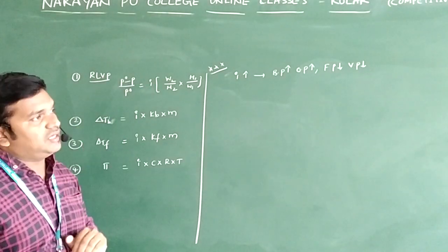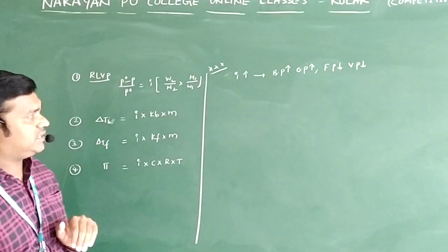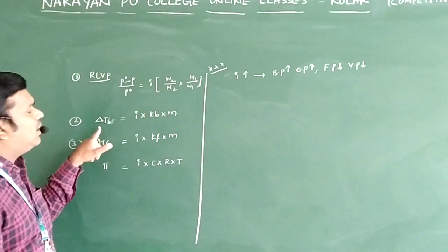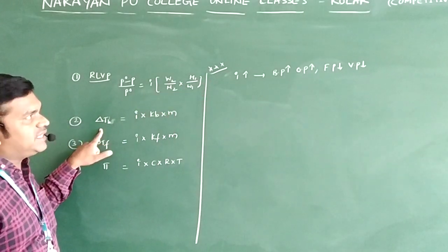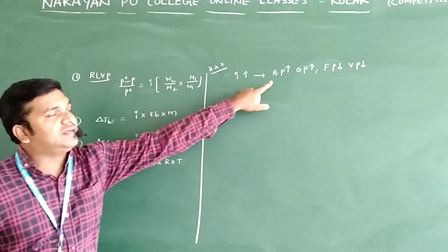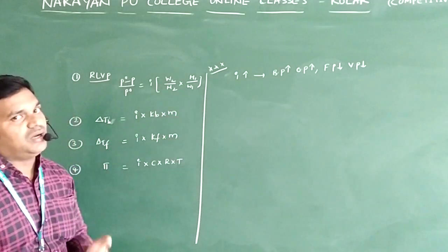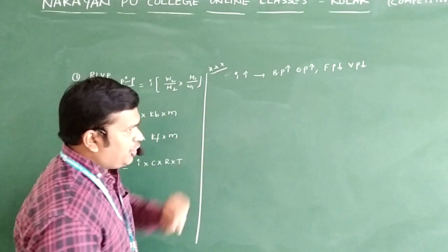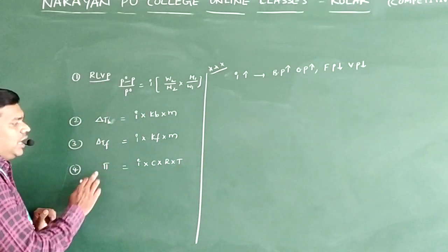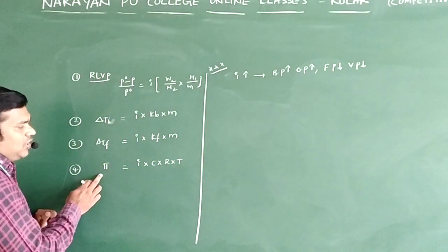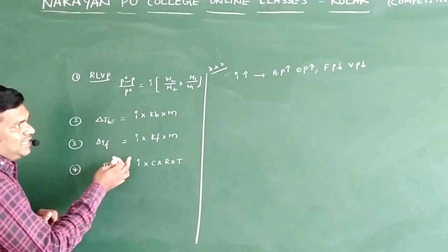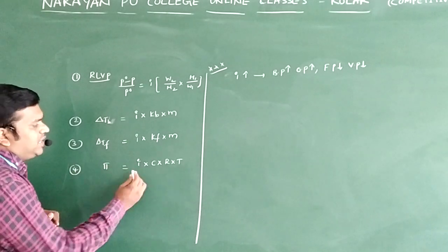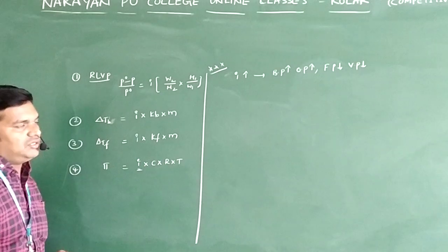When i increases, looking at boiling point elevation — as i increases, ΔTb increases, so the boiling point of the solution increases. For osmotic pressure — as i increases, osmotic pressure of the solution also increases. These two properties increase with increasing i value.